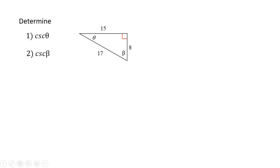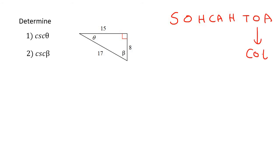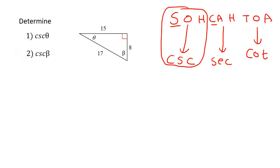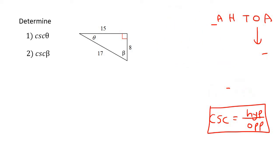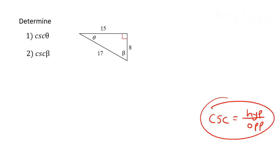For this question they now ask us to do cosec. Let's write down SOHCAHTOA once again. Remember, tan is the opposite of cot because the Ts go together. If this starts with a C, the other one must start with an S. If this starts with an S, the other one must start with a C — so that would be cosec. Since sin is normally opposite over hypotenuse, cosec is the other way around: hypotenuse over opposite. This is what we need to use for the rest of this question.